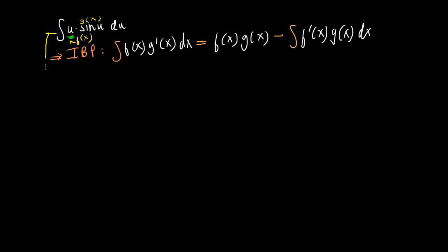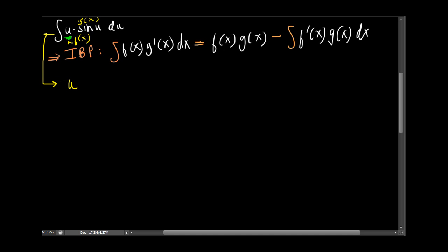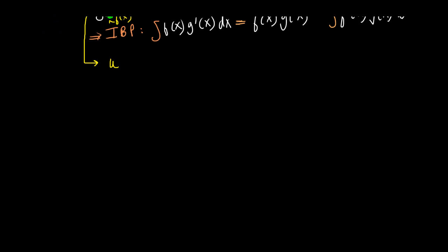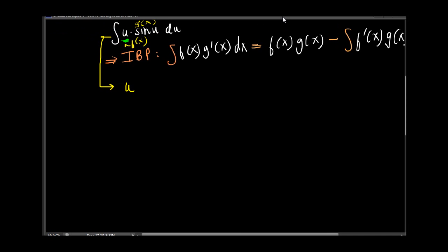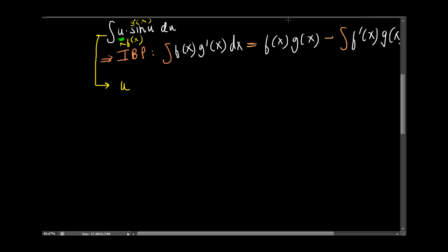So the whole integral now becomes, according to this, it is f of x. f of x is u times g of x. Oh sorry, this is g prime of x.